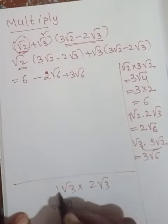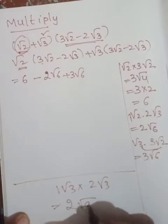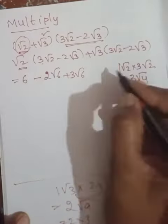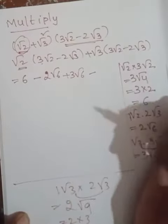Next you have √3 × 2√3. 1 × 2 is 2, √9. As you know, this is equal to 2 × 3, which is 6.